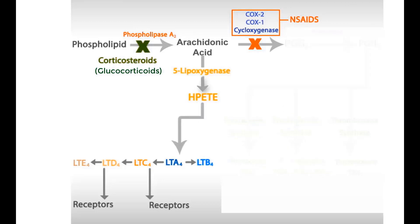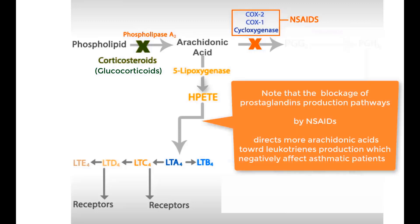NSAIDs inhibit the production of all prostanoids, including prostaglandin, thromboxane, and prostacycline. It is clinically important to note that the blockage of prostaglandin production pathways by NSAIDs directs more arachidonic acid toward leukotriene production, which negatively affects asthmatic patients.